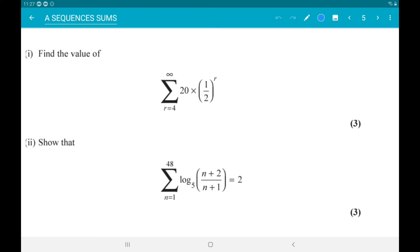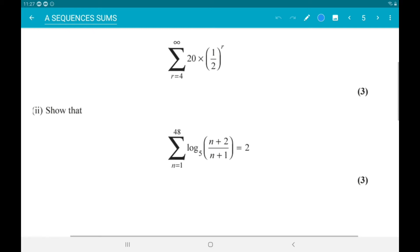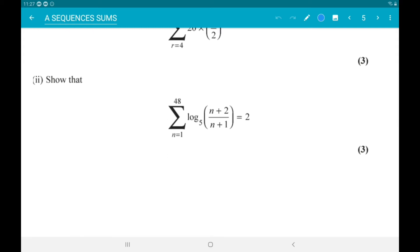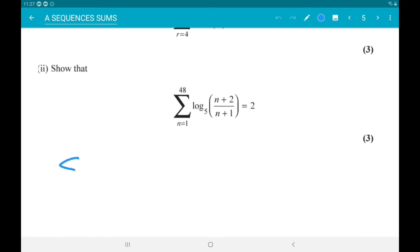So we need r for the sum. So where they have r's, I'm going to use n. So we want the sum from n equals 4 to infinity of twenty times one half to the n.